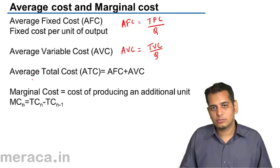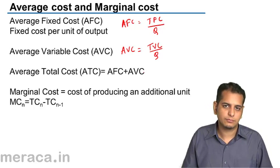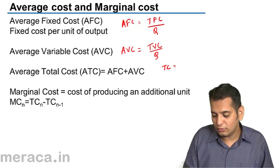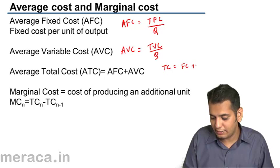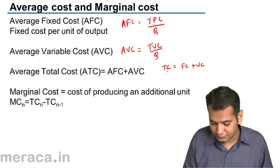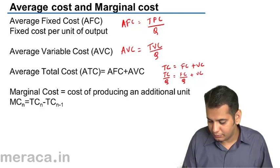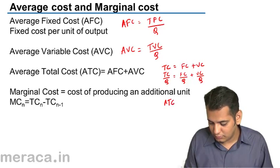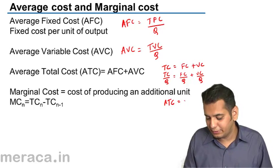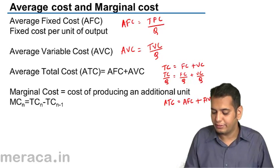Average total cost is the sum of average fixed cost and average variable cost. We know that total cost is the sum of fixed cost and variable cost. If we divide by Q on both sides, we get: TC/Q equals FC/Q plus VC/Q. TC/Q is average total cost, fixed cost by quantity is average fixed cost, and variable cost by quantity is average variable cost. Thus we get this formula.